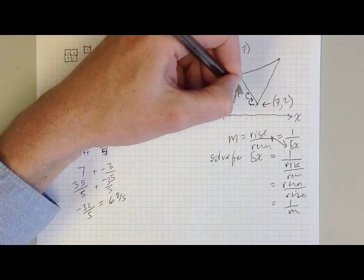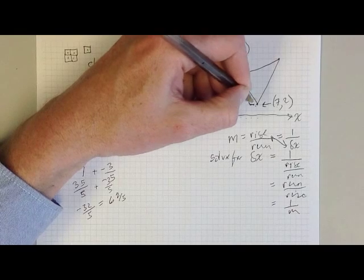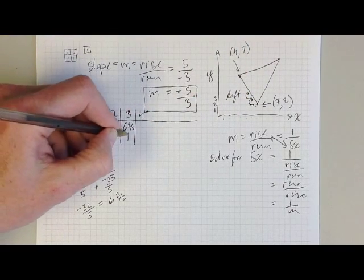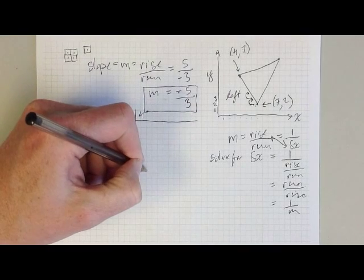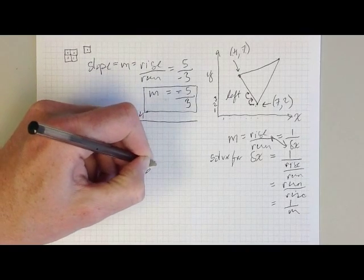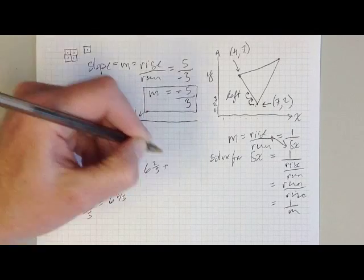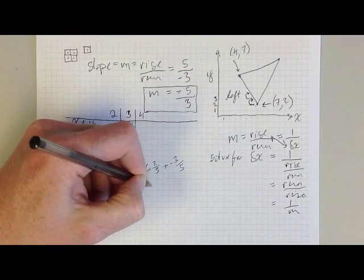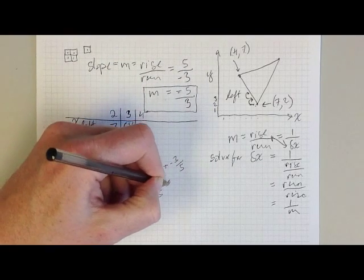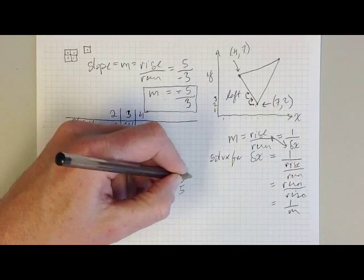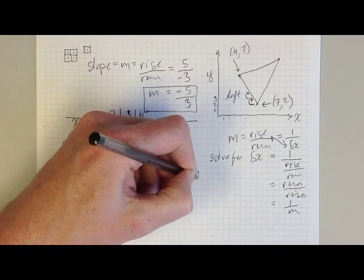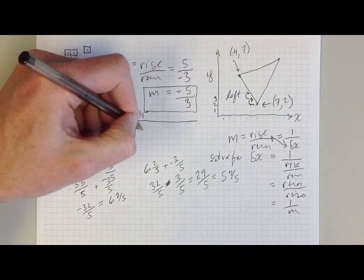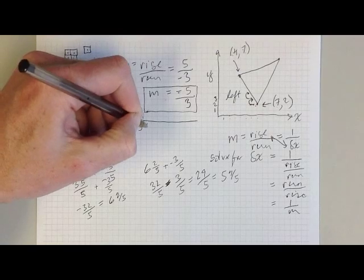And then when I go up to scan line number 4, I apply another delta x to 6 and 2 fifths. So I take 6 and 2 fifths and then add negative 3 fifths. And so that's really 32 fifths minus 3 fifths, which is equal to 29 fifths, which is equal to 5 and 4 fifths. So I get 5 and 4 fifths here.